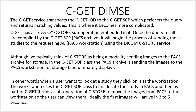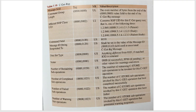Here is a C-GET response message. The C-GET request has already been processed — this is the C-GET response. What to notice here is the number of sub-operations that are remaining. Remember, when an image gets moved, the whole image doesn't move at one time — the image gets cut into sections, 9 to 12 packets that form one image.